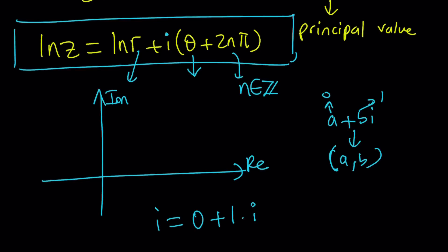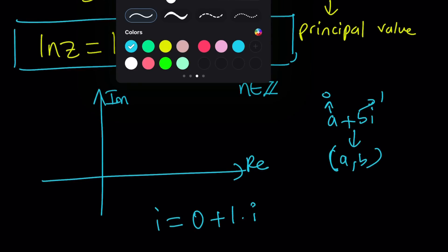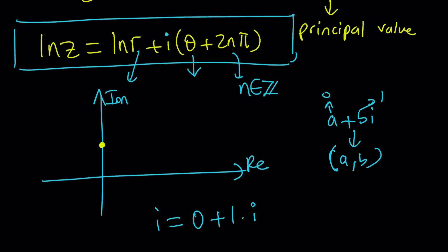Or maybe I should use a different color. Let's use this one. So that's my number i, and obviously its distance from the origin is going to determine r, and in this case, r would be 1. And the angle is basically going to be the angle between the real axis and the imaginary axis, and that would be 90 degrees or π over 2 radians. So that's my theta, and that's my r.